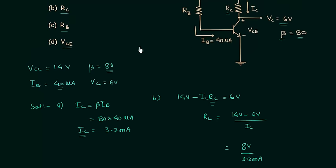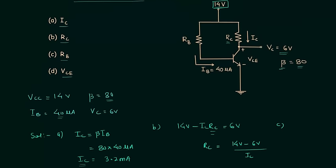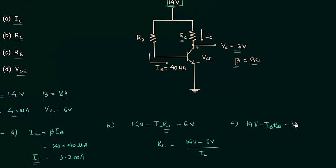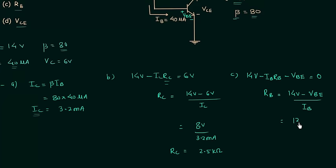For part C, I need to calculate resistance Rb. I will use KVL in the input loop, starting from 14 volts: 14 volts minus Ib·Rb minus Vbe equals 0. So Rb equals (14 volts minus Vbe) divided by Ib. Vbe is 0.7 volts, so we have 13.3 volts divided by 40 microamps, giving Rb equal to 332.5 kilo-ohms.